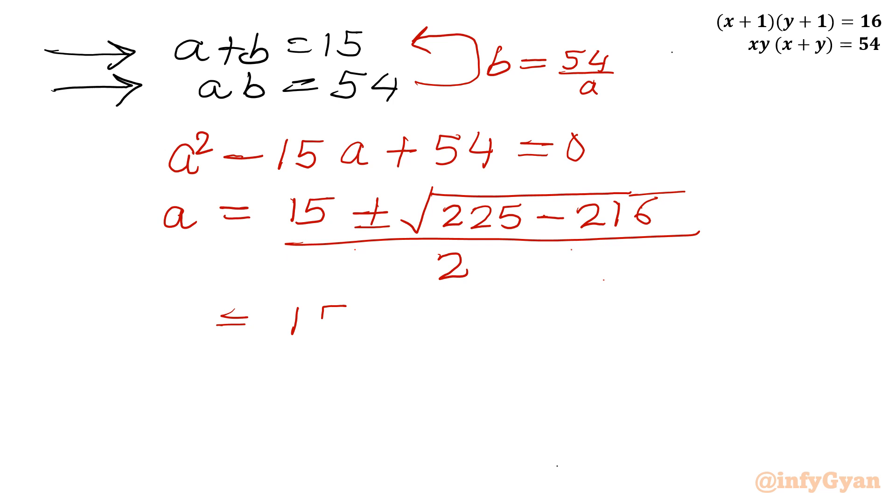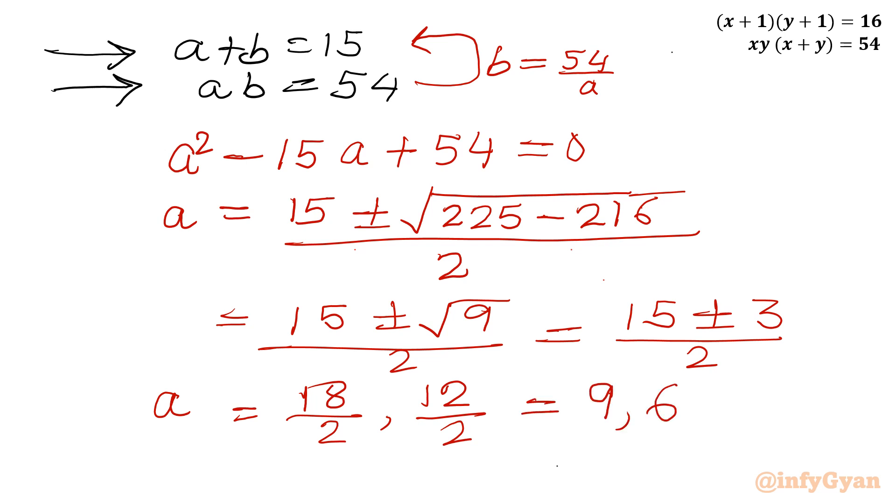This will give us 15 plus or minus square root of 9 divided by 2. So I can write equals 15 plus or minus 3 divided by 2. With plus sign I will get 18 over 2, with minus sign I will get 12 over 2. And this is our value of a. So I will write 9 and 6. Now from here I can write the value of b also.